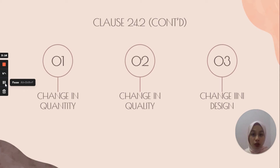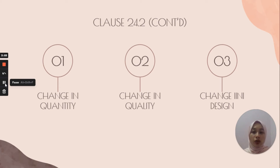Number two is the change in quality. There is an increase and also decrease in quality in terms of the materials or items used. For example, the SO requests the contractor to change the grade of concrete for a column from grade 25 to grade 30.